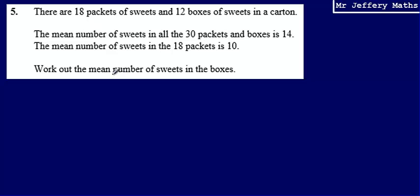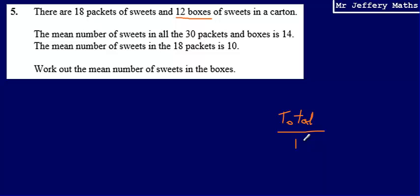In order to work out the mean number of sweets in the boxes, I know that there are 12 boxes but I don't know how many sweets are in those boxes. So what I need to do is figure out what the total number of sweets is in the boxes, because that divided by 12 is going to give me the answer I'm looking for.